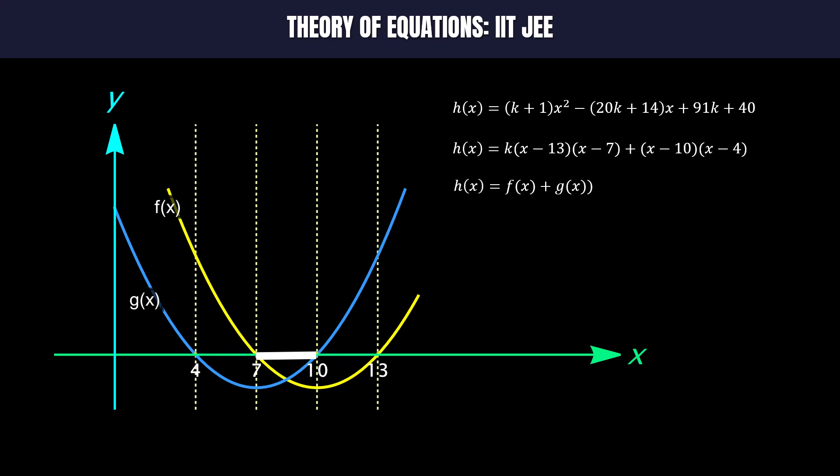Third, when x is greater than or equal to 7 but less than or equal to 10. In this interval the value of h(x) is always negative because f(x) and g(x) are non-negative. Hence h(x) will not have any root in this interval.